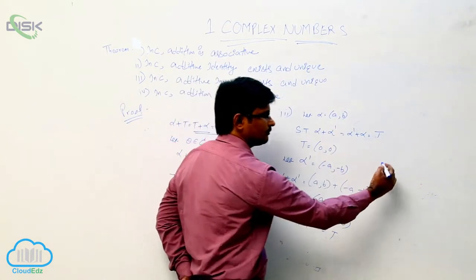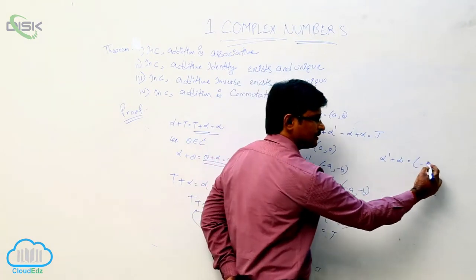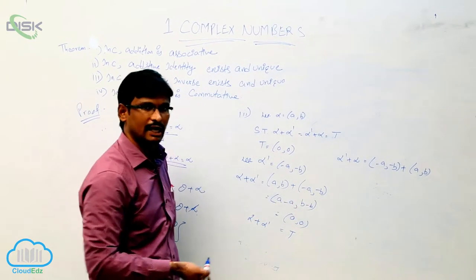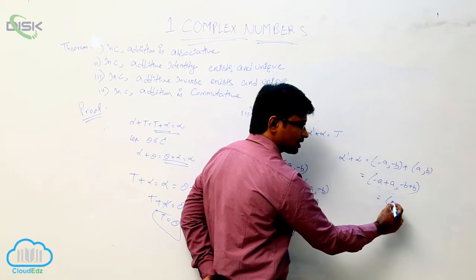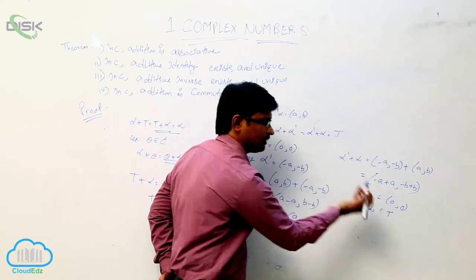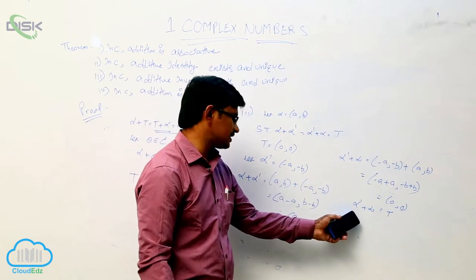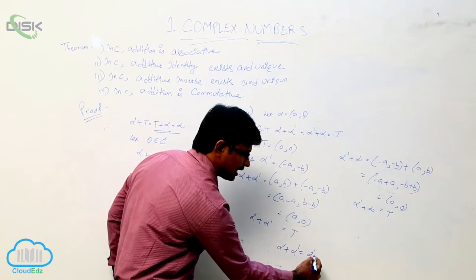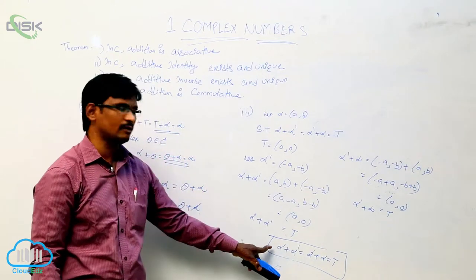Similarly, alpha_dash plus alpha: alpha_dash is (−a, −b) plus alpha which is (a, b). Adding corresponding elements: (−a + a, −b + b) equals (0, 0), which is the additive identity t. So alpha_dash plus alpha equal to t. From these two results, alpha plus alpha_dash equal to alpha_dash plus alpha equal to t, and therefore alpha_dash is called the additive inverse of alpha.